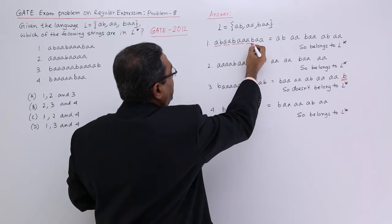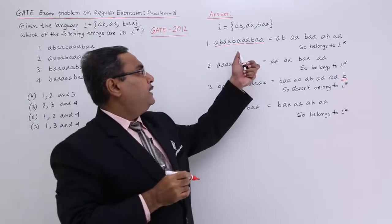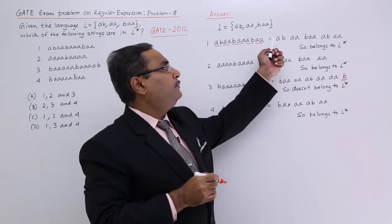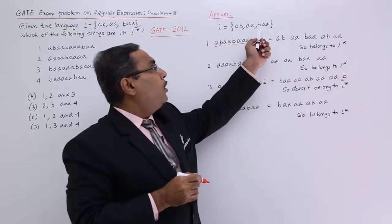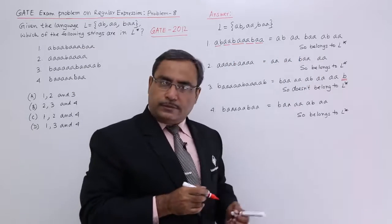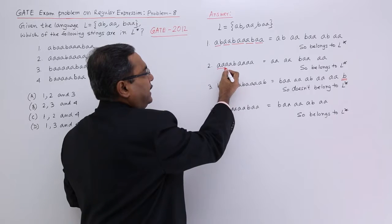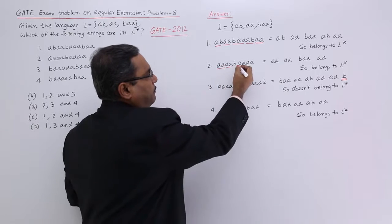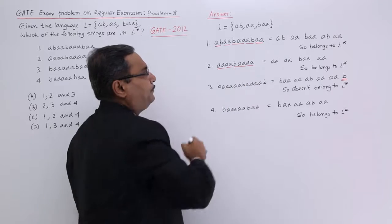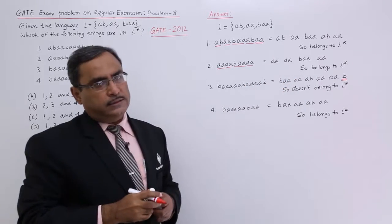I am getting this A B and the last part is A A. So this particular string is nothing but the concatenation of strings belonging to this set L, so it belongs to L star. Next one: we are having AAAA, BAA, and AA — in this way it is also belonging to L star.